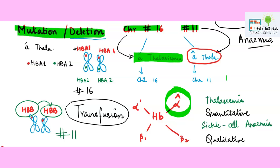The overall possible solution for thalassemia till date is blood transfusion, which however is not very beneficial in the long run because chances of infection are higher and the liver gets affected. The inheritance of thalassemia and sickle cell anemia is the same.